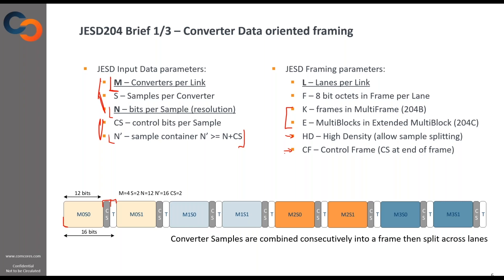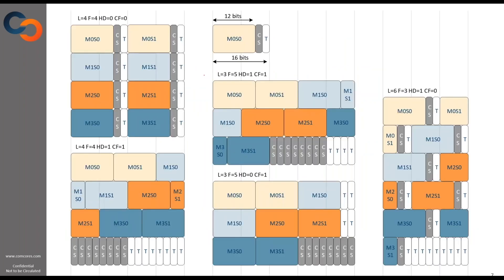Here you can see different pictures of different frames as examples. On the rows we have lanes — four lanes in the first example. Each column denotes an octet, so eight bits. Before we had the data example of N equal to 12, so there are 12 bits of sample followed by two bits of control and two bits of padding to form a 16-bit container.